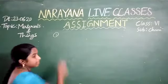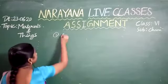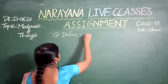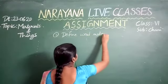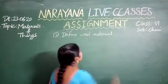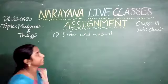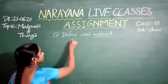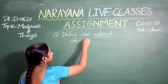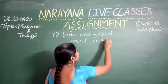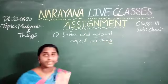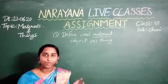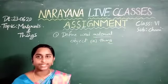First question: define the word material. Material is nothing but the matter from which an object or anything can be prepared. It is called a material.